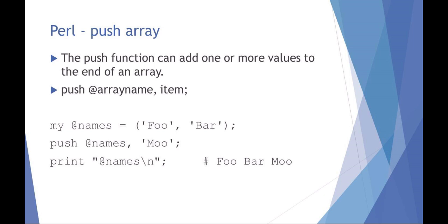Pop removes the last element of an array — it tells you what that last element is and actually removes it. In this example, we have an array of names: foo, bar, and baz. Pop is going to remove the last element and return it. So if you say 'my last element equals pop array name', that last element is the last element in the array, and your array is now short that last element.